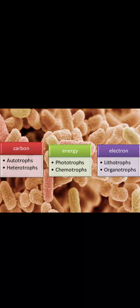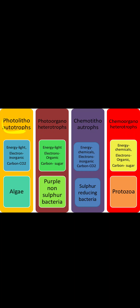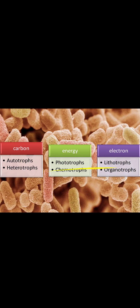The first classification is photo-litho-autotrophs. These organisms use light as their source of energy, inorganic substances as their source of electrons, and carbon dioxide as their source of carbon. They can also be called photo-autotrophs, and it is understood they are photo-litho-autotrophs. An example is algae.